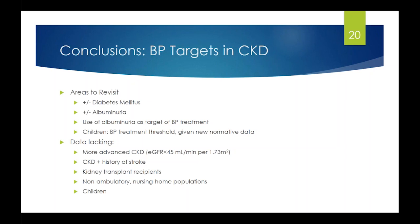In conclusion on blood pressure targets in CKD, areas warranting revisiting include blood pressure targets in patients with and without diabetes and with and without albuminuria, whether to use albuminuria as a target for blood pressure treatment intensity, and the treatment threshold in children given new normative data. There's also a recognized lack of data in important subgroups: patients with eGFR less than 45, patients with both CKD and stroke history, kidney transplant recipients, older non-ambulatory nursing home patients, and children.